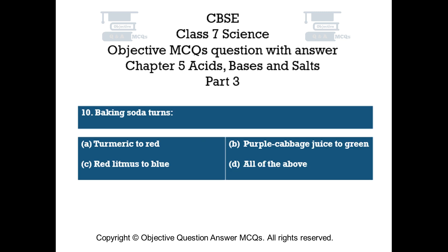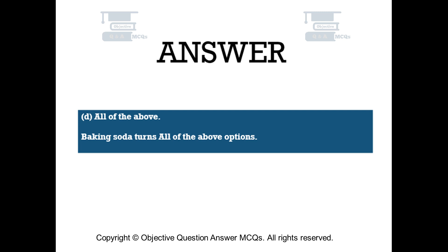Question number 10: Baking soda turns. Option A: turmeric to red. Option B: purple cabbage juice to green. Option C: red litmus to blue. Option D: all of the above. The right answer is option D — all of the above. Baking soda turns all of the above.